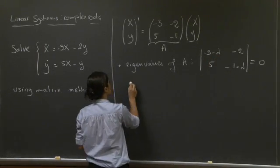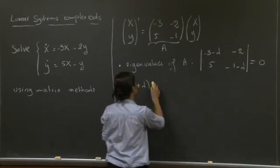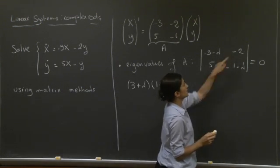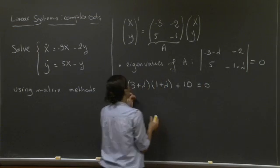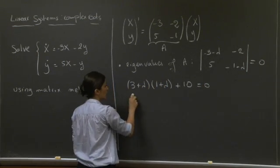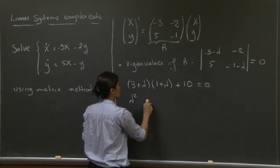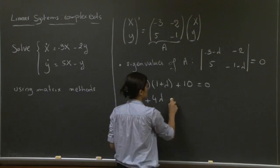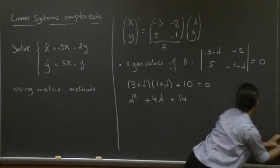And to get this determinant, we're basically multiplying these two terms, minus minus 2 times 5, which gives us a plus 10. So here we're going to have lambda squared plus 4 lambda, and 3 plus 10 gives us 13.